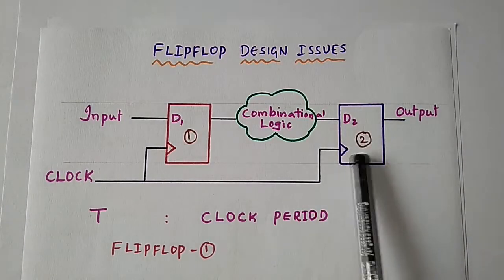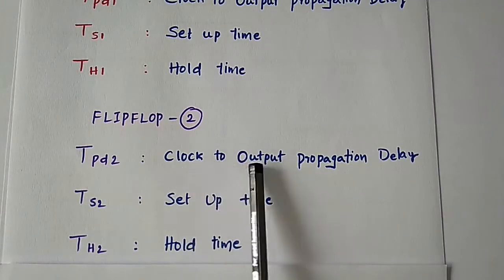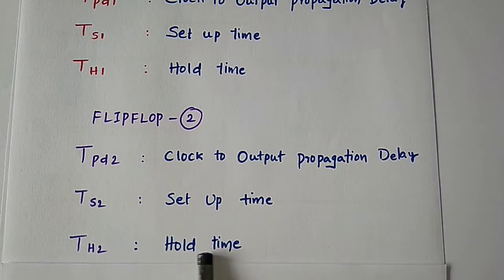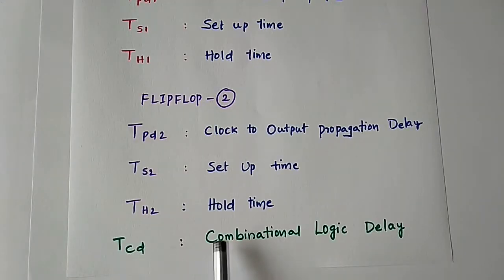Similarly, for flip-flop 2, tpd2 is the clock to output propagation delay, ts2 is setup time and th2 is hold time, and tcd is the combinational logic delay. And for the rest of this lecture, we go with these short forms.